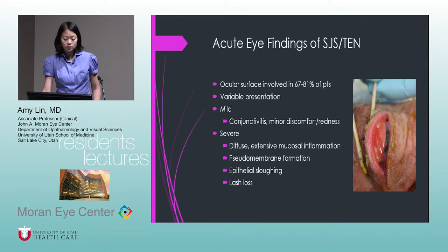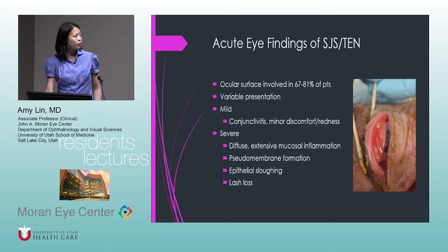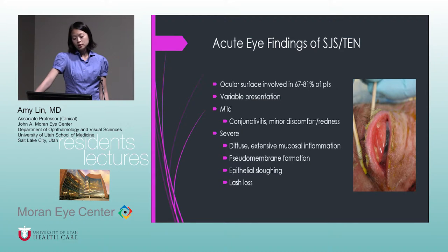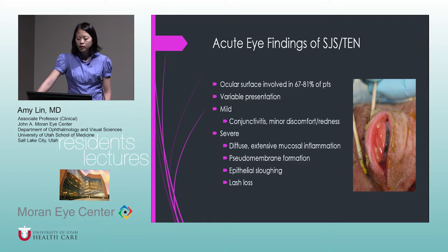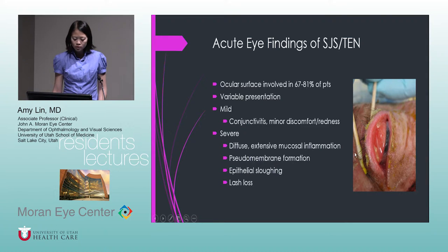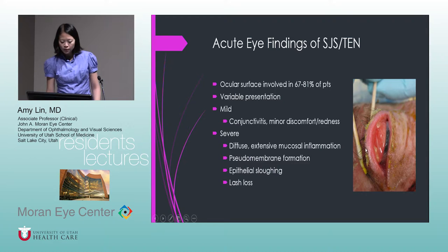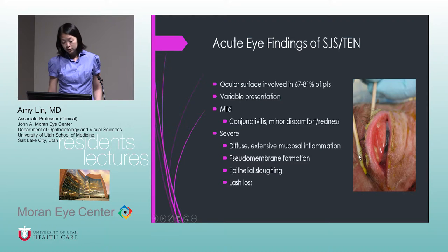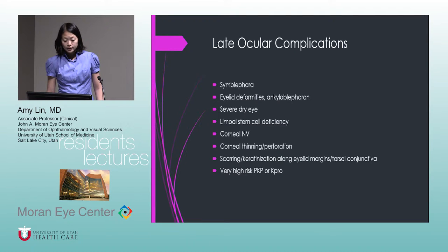Acute eye findings: ocular surface involvement occurs in 67 to 81% of patients, so we believe essentially all patients diagnosed with Stevens-Johnson should be screened for ocular symptoms. However, there can be variable presentation — some may have no ocular signs, some only mild conjunctivitis, and it can progress to severe: diffuse extensive mucosal inflammation, pseudomembrane formation where the tarsal conjunctiva separates and sloughs off.